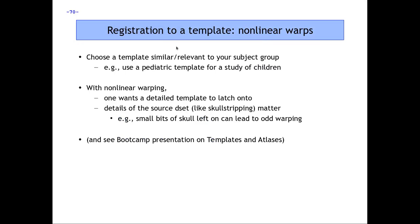When aligning to a template, there are a few considerations. You should choose a template most relevant to your subject group — for a pediatric dataset, use a template meant for children, which will improve alignment results. When using nonlinear warping, make sure your template has a lot of detail. Nonlinear warping uses many degrees of freedom over patches, pushing and pulling sulci and gyri. If there's no detail in your template, you won't get much benefit from that flexibility — there's nothing to latch onto. Use a very sharp, crisp dataset with good resolution.